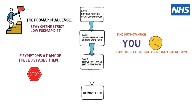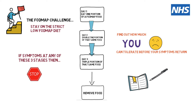If you get symptoms at any stage in this process — very definite symptoms, not just very mild small symptoms — then stop at that point, remove the food, wait for the symptoms to pass, and then move on to test the next food. Make a note of what happens with each of the foods, because as you get towards the end, you won't have any way of remembering what happened with those early foods you trialled. So it's very important to make a note.